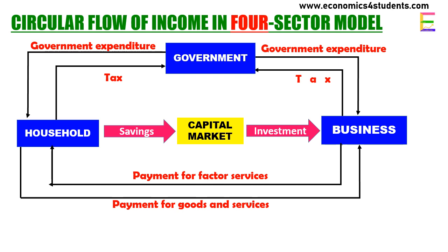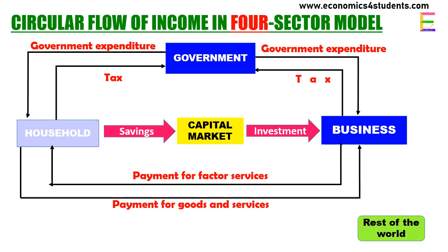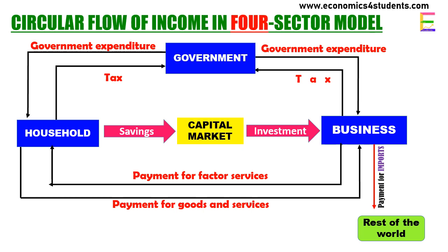So we include the rest of the world sector — the four-sector model comprises households, business, government, and the rest of the world. Here we show only money flow to avoid crowding in the diagram. Interaction between the domestic economy and the rest of the world takes place through the flow of goods and services. There is an outflow of money from the domestic to the foreign sector to pay for imported goods, and on the other hand, there is an inflow of money from exporting domestic products to the rest of the world.